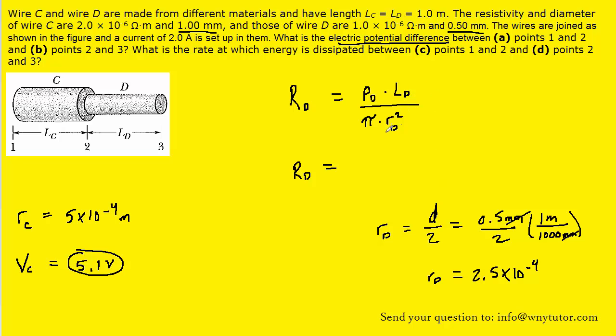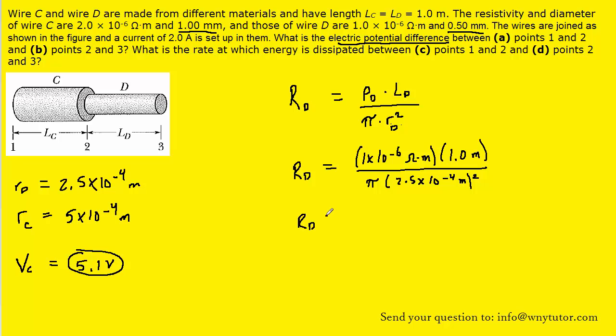We'll go ahead and plug in all the known information for wire D. And then when we work that out, we get a resistance of approximately 5.09 ohms.